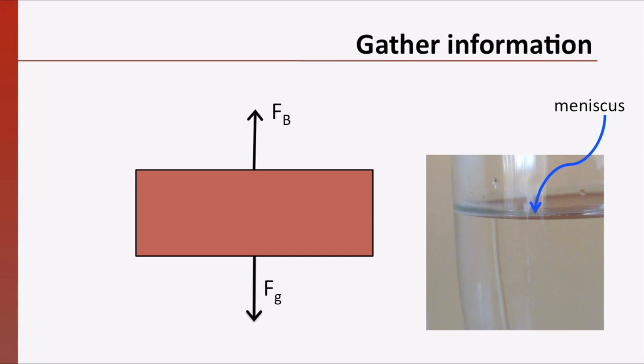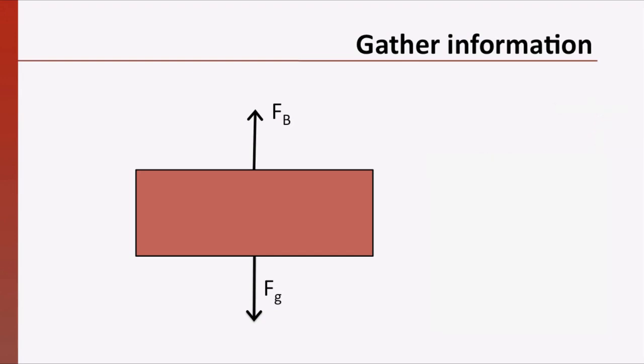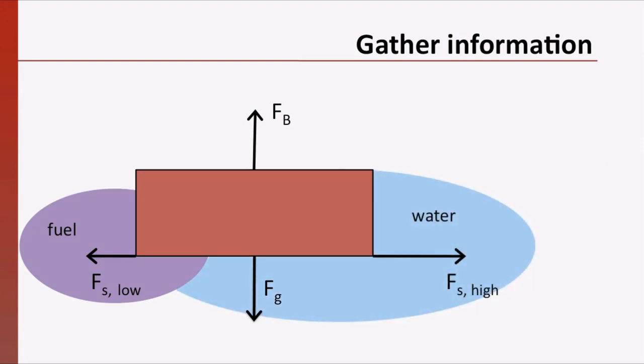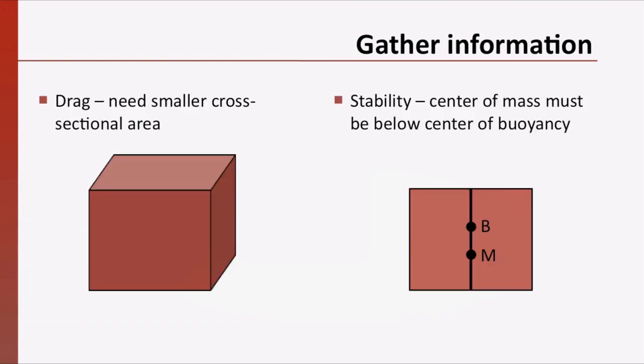Therefore, to make the boat float, we must ensure that the weight of the water displaced balances the weight of the boat. This is Archimedes' principle. In the horizontal direction, we have the force of surface tension of the fuel on the left side, and the force of surface tension of the surrounding fluid, which we will assume is water. If the forces aren't equal, the boat must accelerate according to Newton's laws. Therefore, to make the boat move faster, we want the difference in surface tension to be as great as possible.